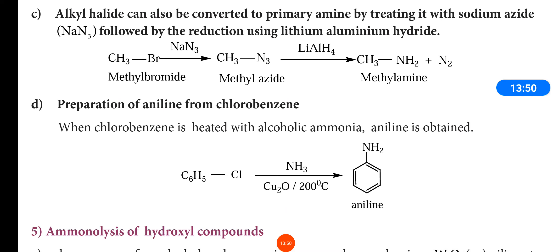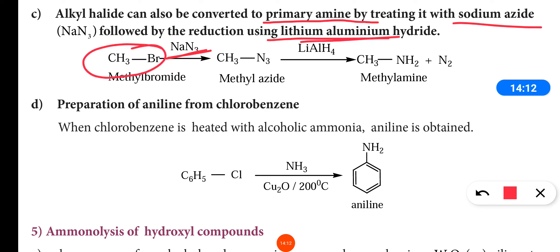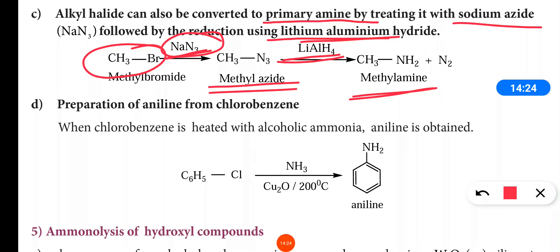Alkyl chloride can also be converted to primary amine by treating it with sodium azide, followed by reduction using lithium aluminium hydride. For example, when methyl chloride is treated with sodium azide it forms methyl azide. Methyl azide on reduction by lithium aluminium hydride forms methylamine.